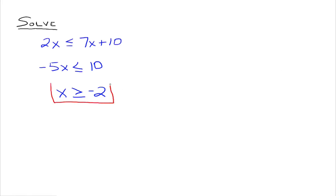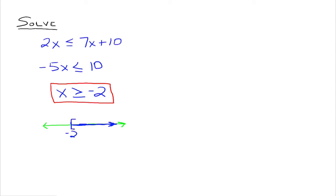Now what would that look like graphically? We'd plot negative 2, and we want all numbers greater than negative 2, so that would be out to the right of negative 2. We shade that, don't forget the arrow on the end to let it know it goes on forever. Negative 2 is included, so you could use a closed circle or a bracket.